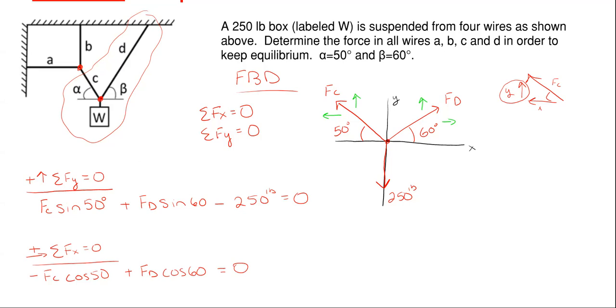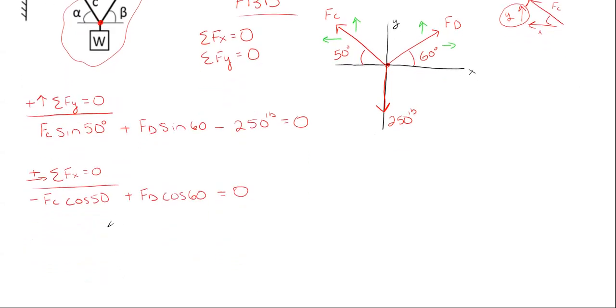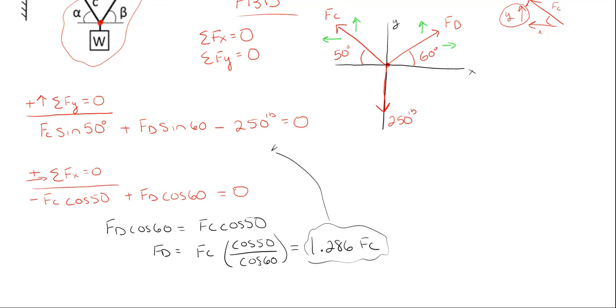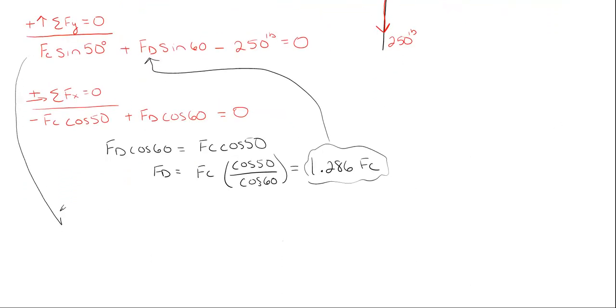So once again, we cannot solve the FX just by itself, but look what we have here, we have two equations and two unknowns, so we can solve this. So working with the FX equation, I'm just going to rearrange this so that we have FD cosine of 60 is equal to FC cosine of 50. So then FD would just be equal to FC multiplied by the cosine of 50 divided by the cosine of 60, and this comes out to be 1.286 FC. So what I can do is I can take this and then plug it into my y equation for FD. So let's do that.